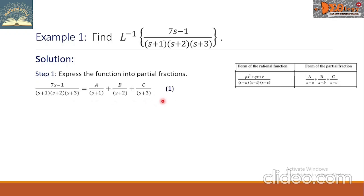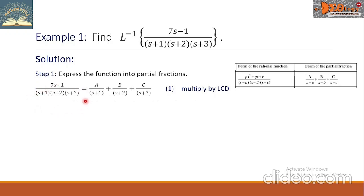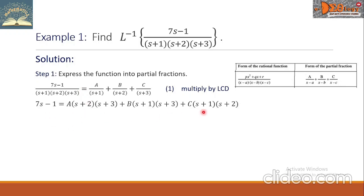Now let us solve for the values a, b, and c. First, multiply this equation by the LCD. Take note that the LCD is the denominator of the fraction on the left side. Multiplying by the LCD, this equation becomes the expanded form.